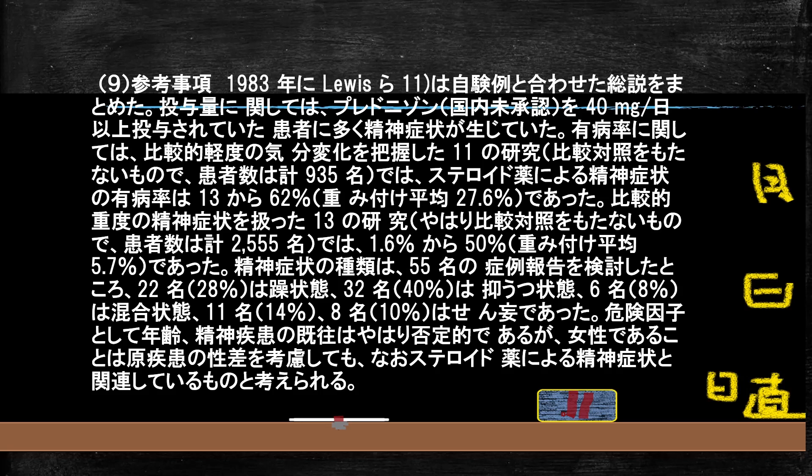重度の精神症状の内訳として、躁が28%、うつが40%、混合状態が8%、その他に痙攣などが出ています。つまりステロイドは躁もうつも混合状態も全部起こすことができ、薬を使っていると出るわけです。